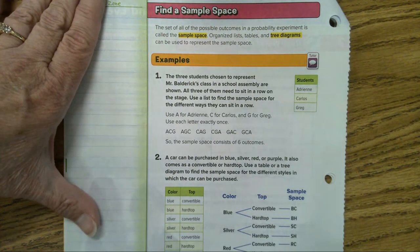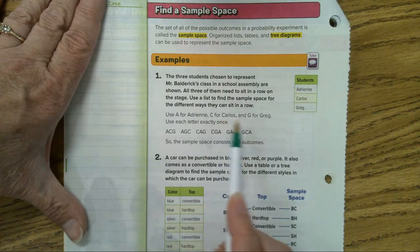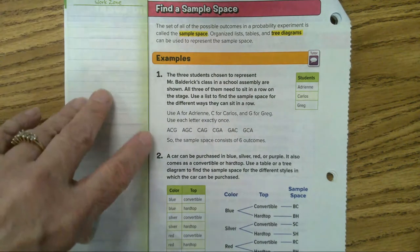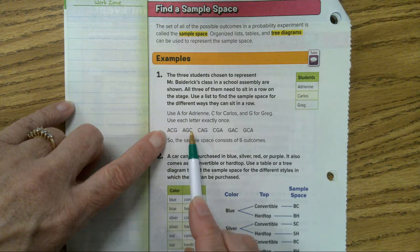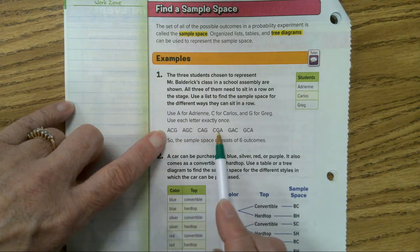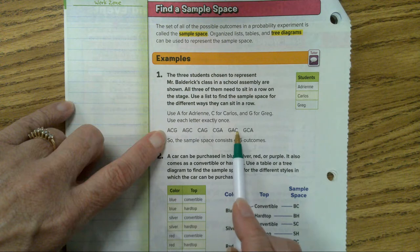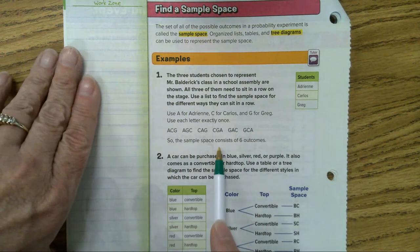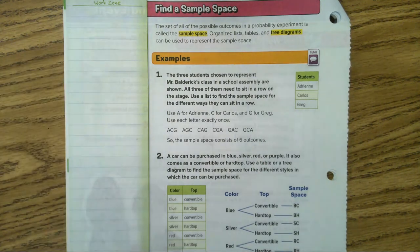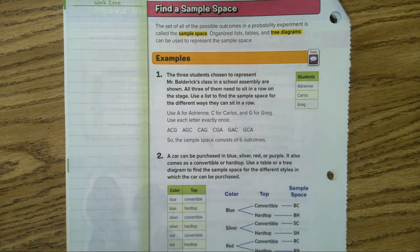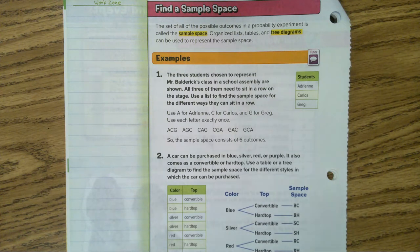Use A for Adrian, C for Carlos, and G for Greg to keep it simple. The possible arrangements are: ACG, AGC, CAG, CGA, GAC, and GCA — the sample space consists of six outcomes. A technique called the tree diagram helps make sure you don't skip outcomes. Yesterday when flipping three coins I forgot heads-tails-tails because I didn't use a tree diagram.